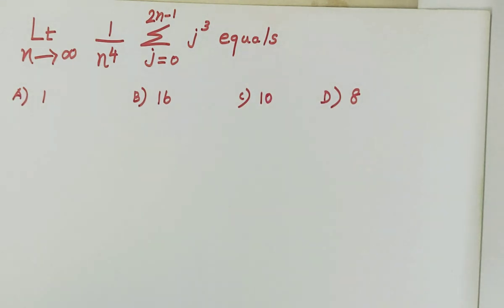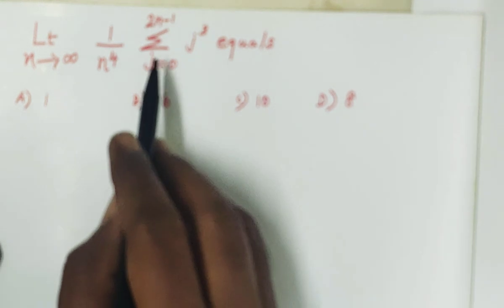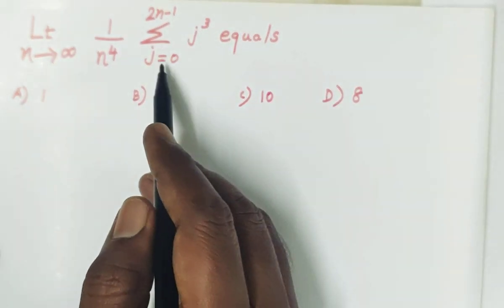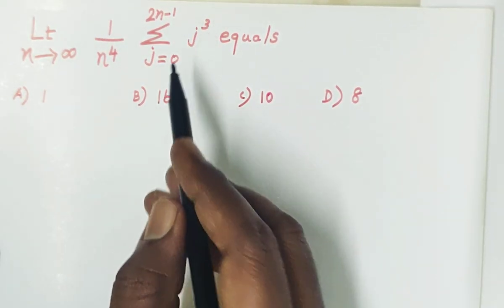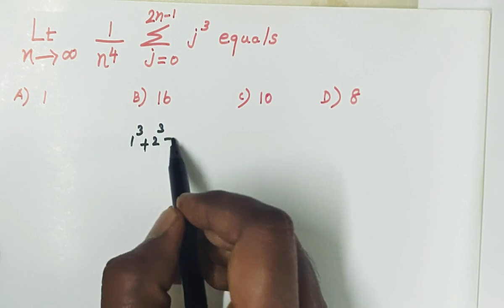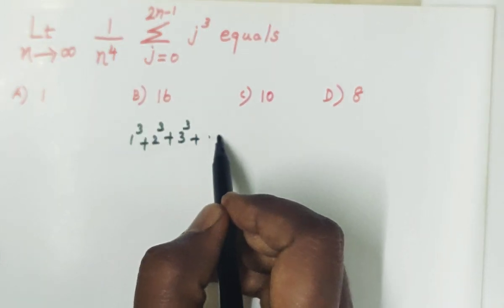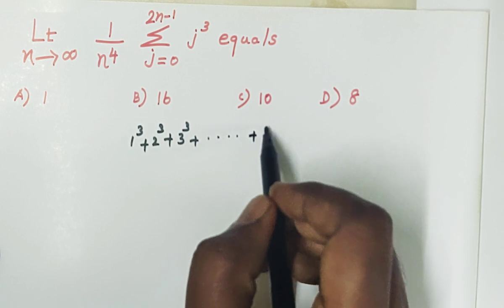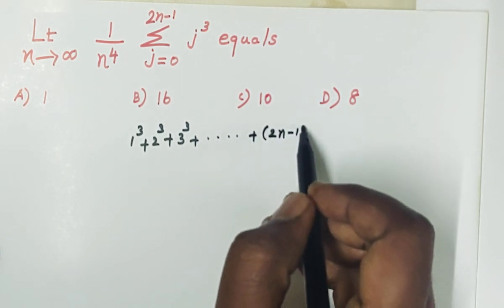So in the series, the given expression is limit n tends to infinity, 1 by n power 4, summation from 0 to 2n minus 1 of j cube. We can substitute j values: j=0 gives 0 cube = 0, j=1 gives 1 cube, j=2 gives 2 cube, j=3 gives 3, 4, etcetera, up to 2n minus 1 cube.